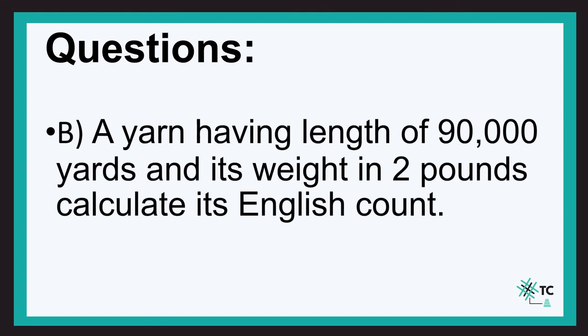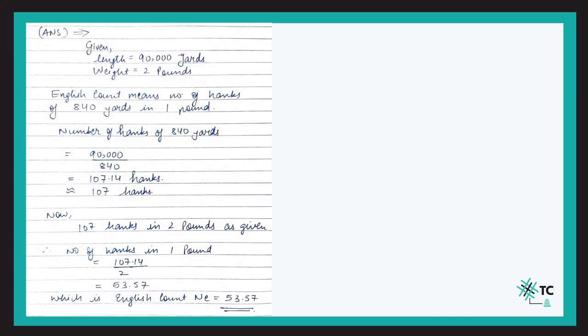Question B: A yarn has a length of 90,000 yards and its weight is 2 pounds. Calculate its English count. English count means the number of hanks of 840 yards in one pound. The number of hanks of 840 yards from 90,000 yards is 90,000 / 840 = approximately 107.14 hanks. Since we have 107.14 hanks in 2 pounds, the number of hanks in 1 pound is 107.14 / 2 = 53.57.